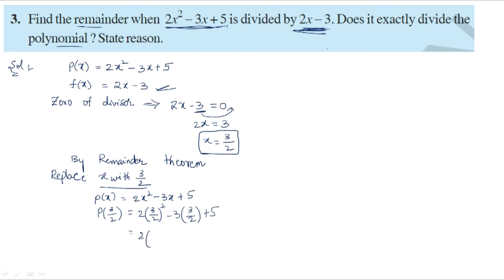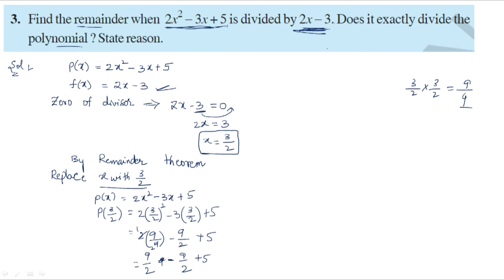2 times (3/2)² equals 2 times 9/4, which is 9/2. And 3 times 3/2 is 9/2. So we get 9/2 minus 9/2 plus 5. Since 9/2 minus 9/2 is 0, we get 0 plus 5 equals 5. So the remainder is 5.